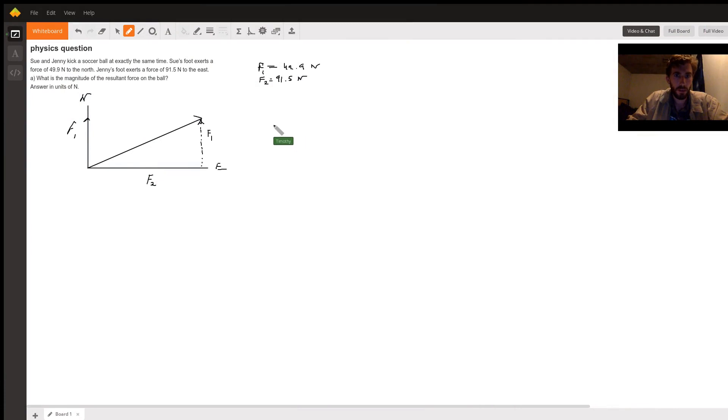This is a pretty quick problem. You're not really going to be using any of the kinematic equations for this. The way I set this up is Sue and Jenny are kicking the soccer ball at the same time, so it seems like they're running into each other. We can represent the soccer ball as this point particle, and there's a force straight up north which is the force Sue exerts at 49.9 newtons, and then there's the force directly east. You can also say this is the x-hat direction just to get used to more physics lingo, and then this is the y-hat direction.